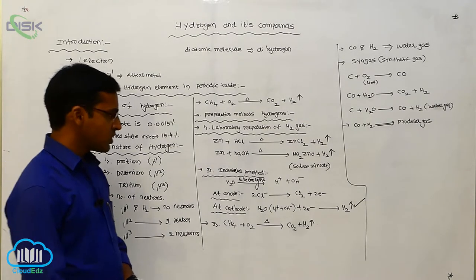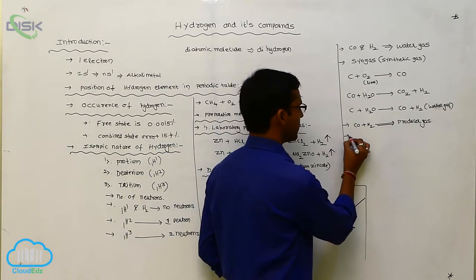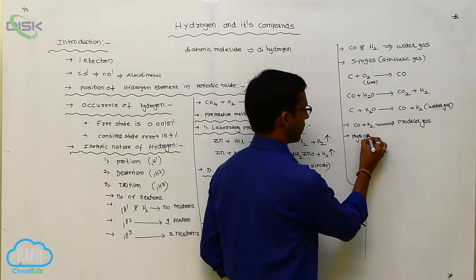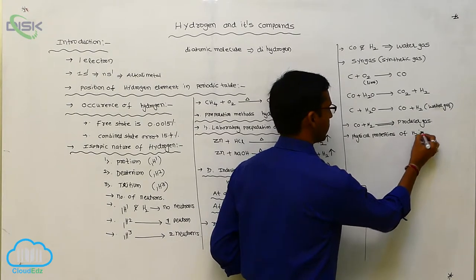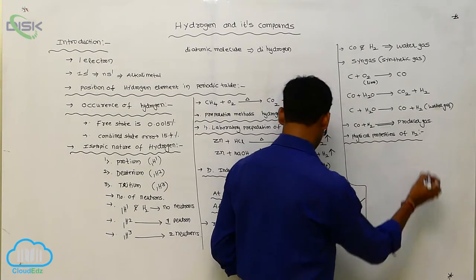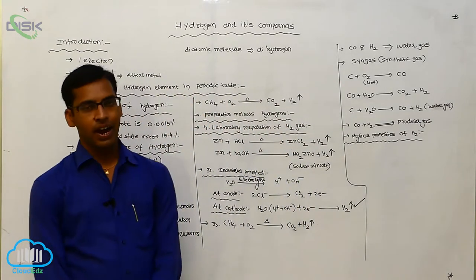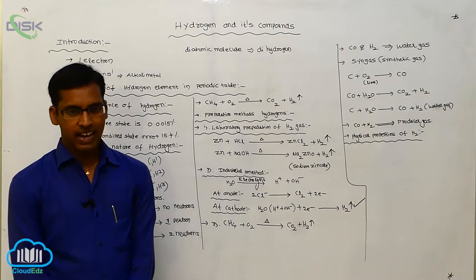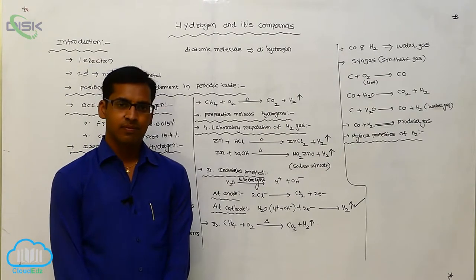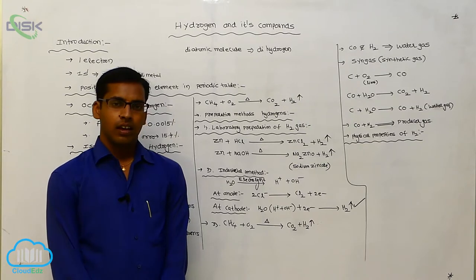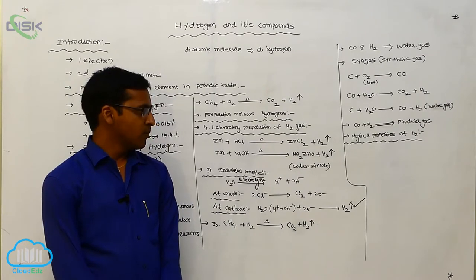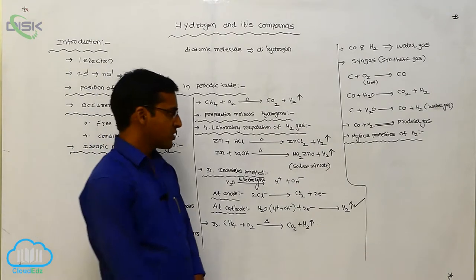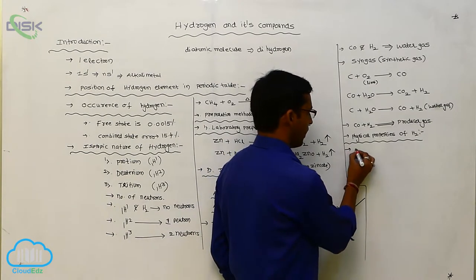After preparation methods of hydrogen, we now discuss physical properties. Hydrogen is a colorless gas with a small atomic size. Between hydrogen atoms, a single bond is present.